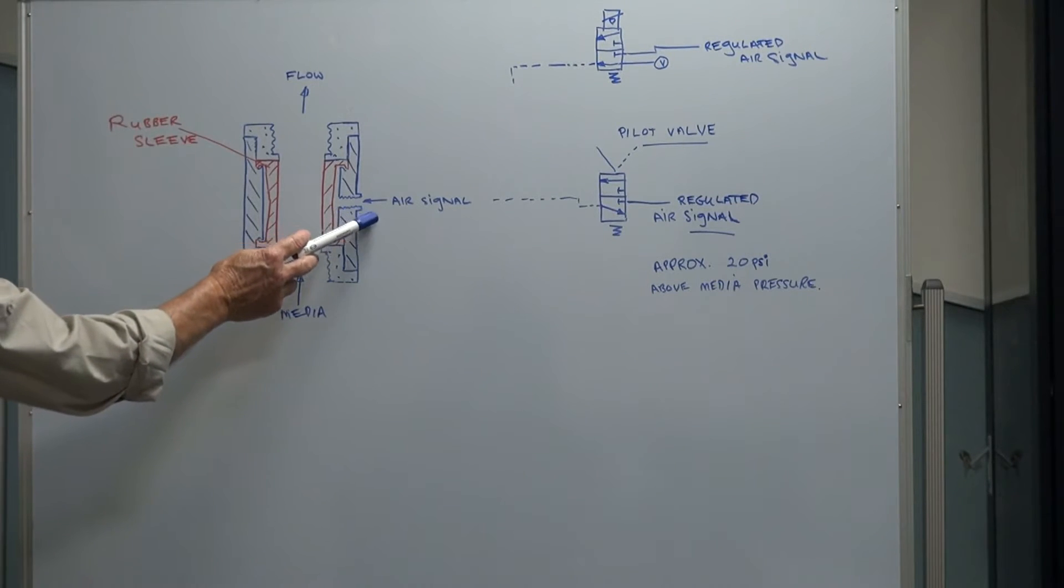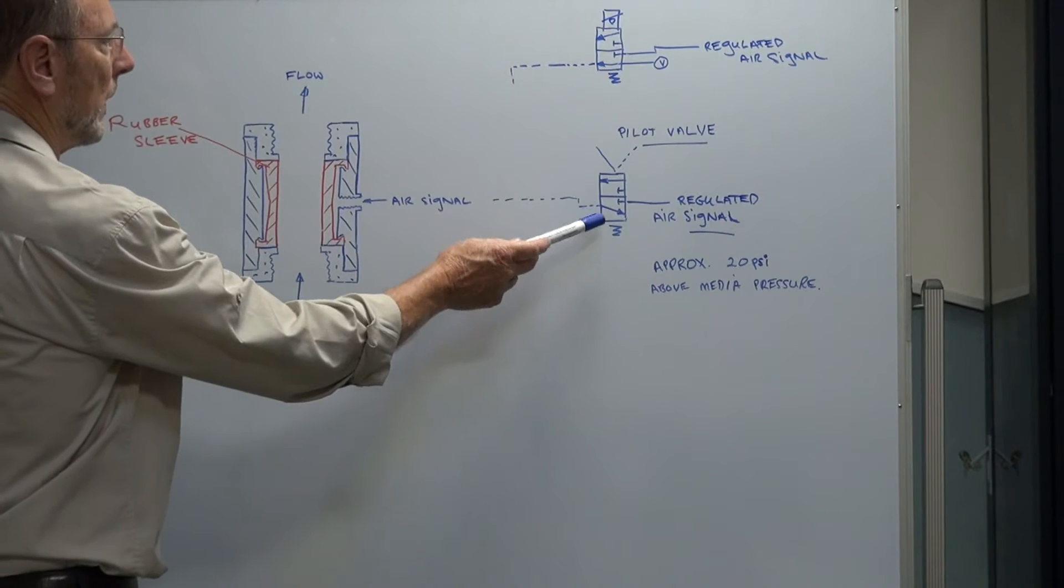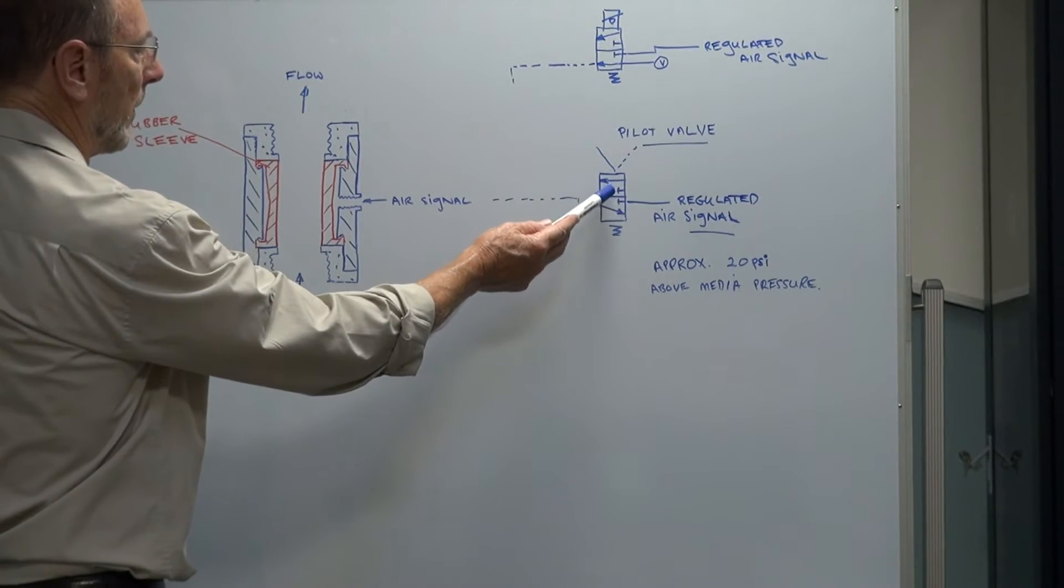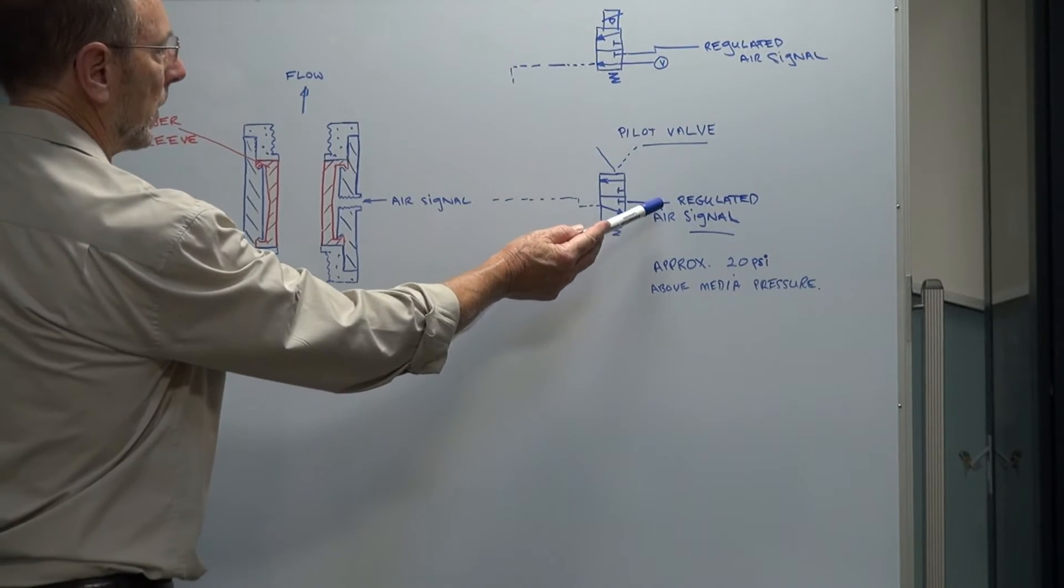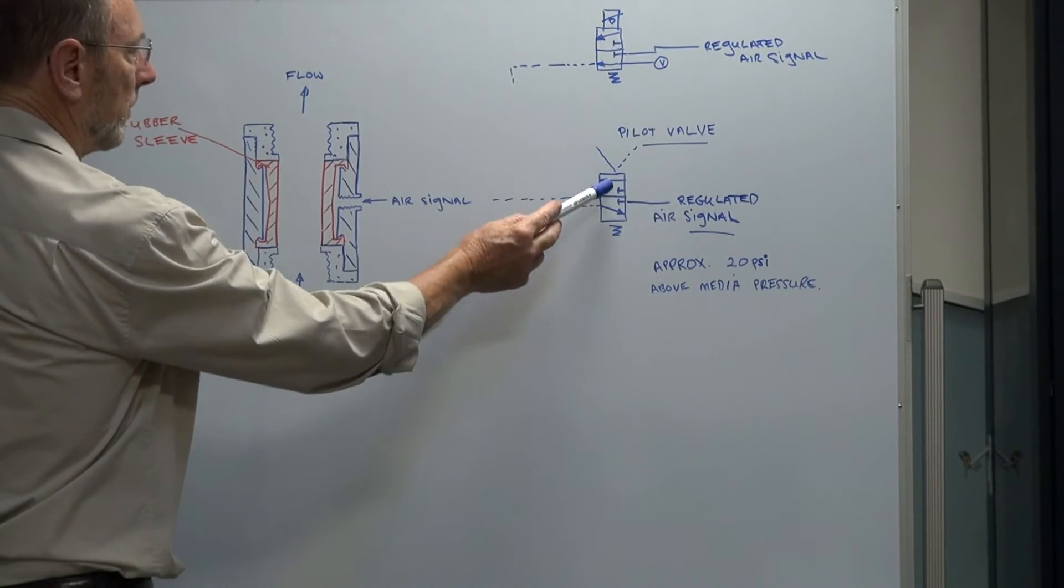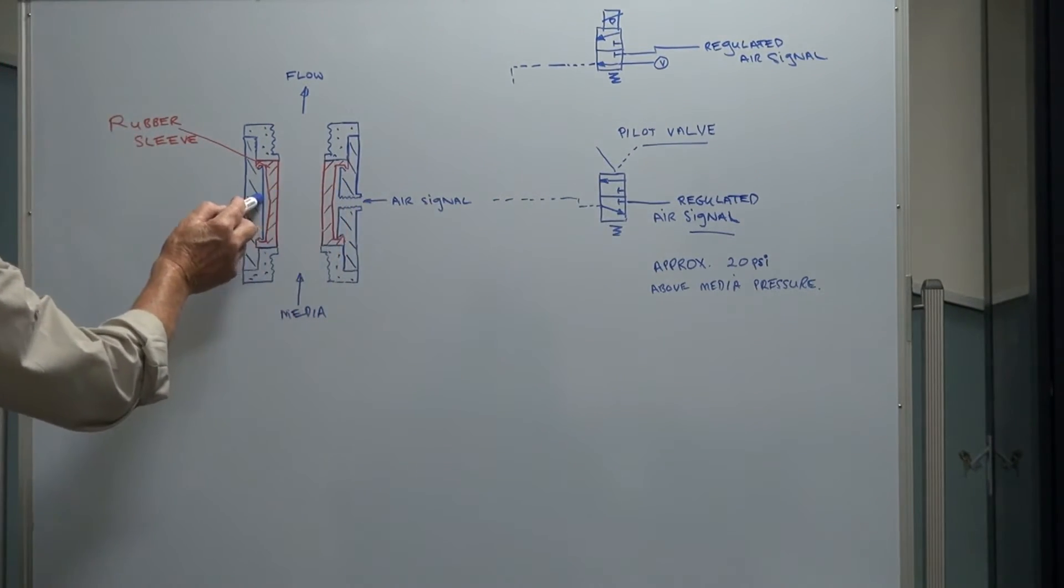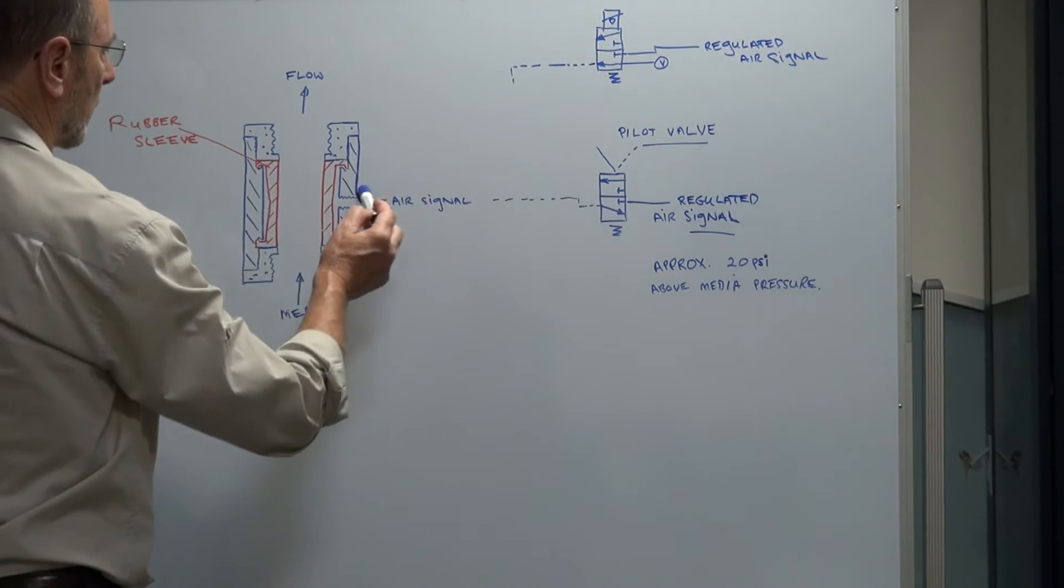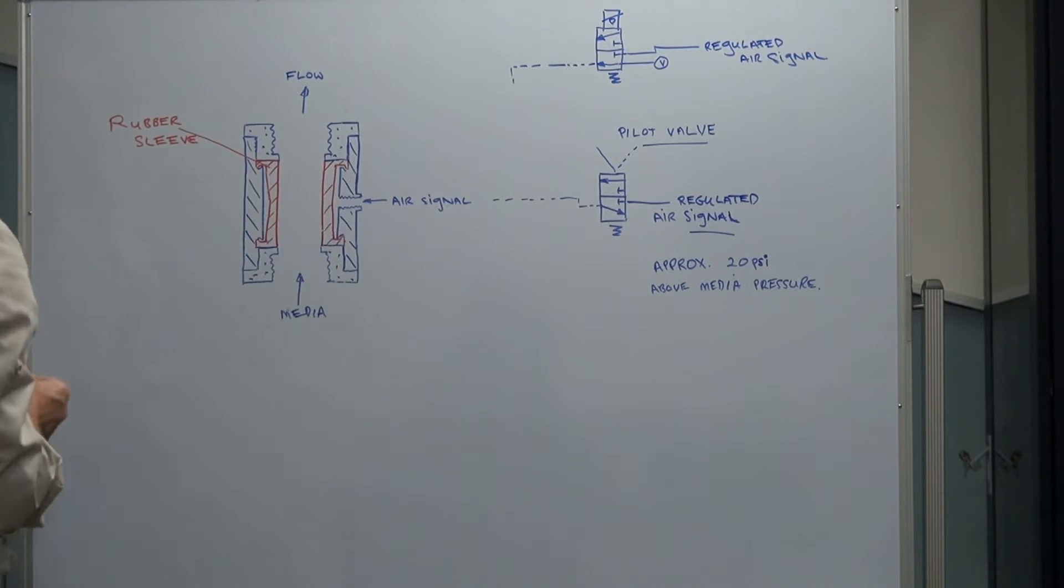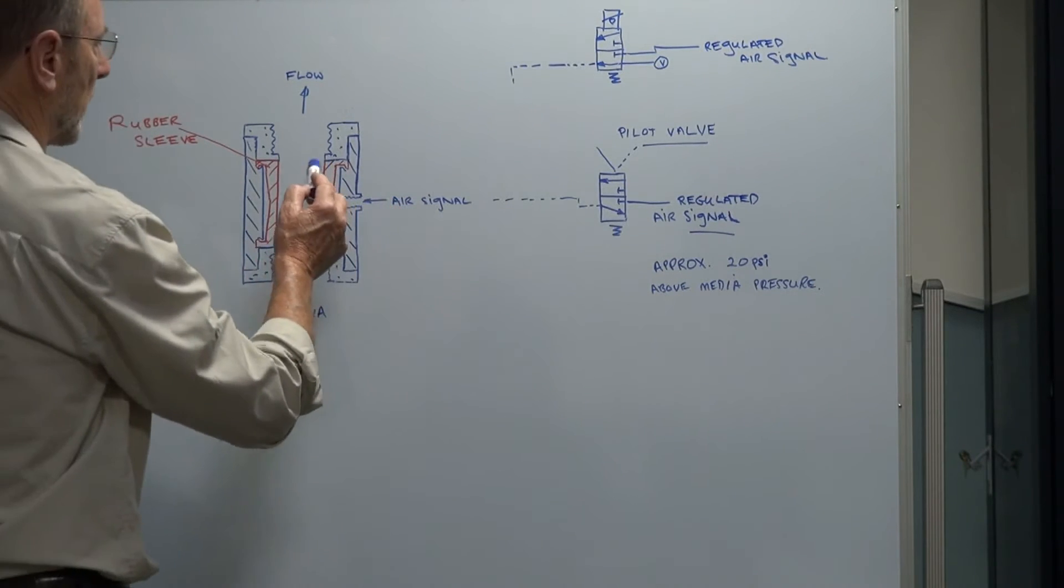With the air signal over here, normally it's just a three-way valve, pilot valve, or solenoid valve. The regulated air signal comes through here, switches on, squeezes this closed, stops the flow of the product. Release the signal back out through the three-way valve, sleeve pops back out again, and the product starts flowing.